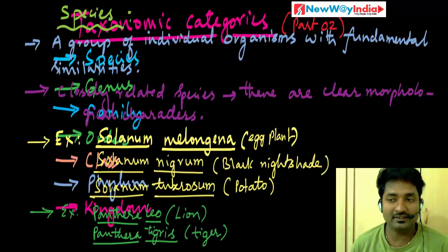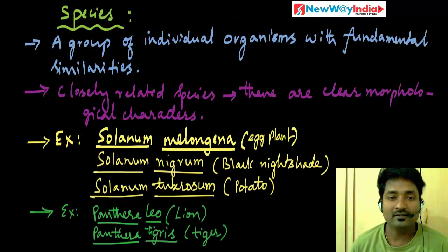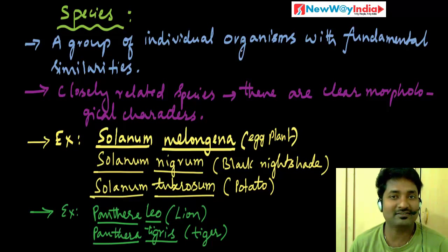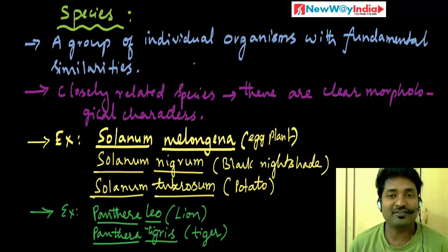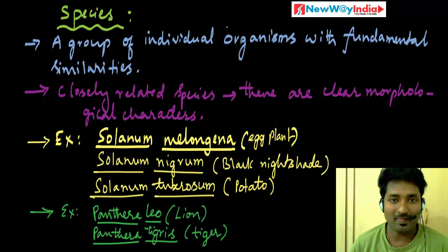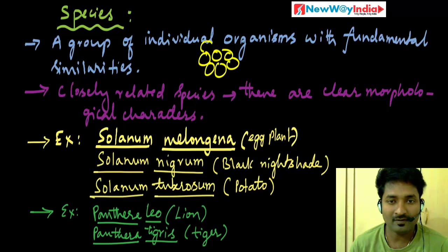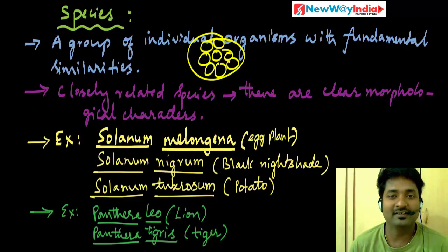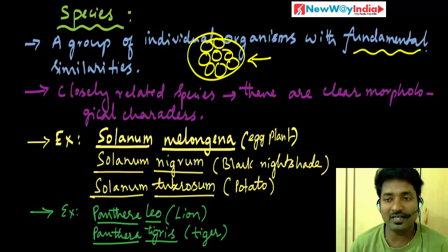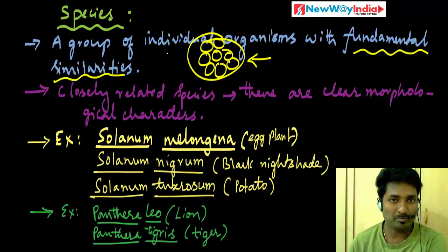For example, if you look at species — what is the species? You need to ask that question because that is very very important. It is a group of individual organisms with fundamental similarities. If you include a group of organisms and say this is one species, it is because they are having fundamental similarities. We call a group with similarities a species.